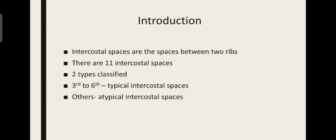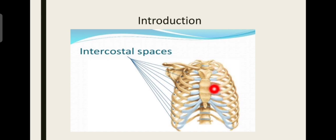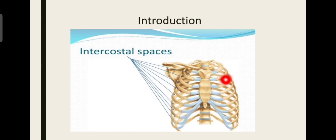First of all, introduction — what are the intercostal spaces? We see the sternum here: this is the manubrium of sternum, this is the body of sternum, and this is the xiphoid sternum. These are called ribs and the blue colored structures are called costal cartilage. The ribs are connected to the sternum with the costal cartilages, and on the back side they are connected to the vertebra. The space between the two ribs is called the intercostal space. We have a total of 11 intercostal spaces, as beyond the 12th rib we don't have any more ribs.